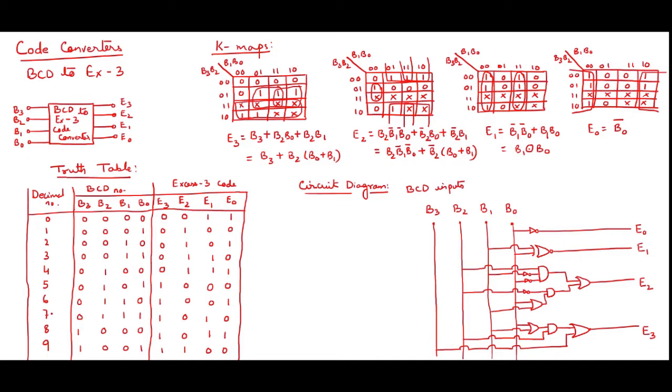So I have taken 0 to 9 for BCD, that is the decimal number, because BCD is nothing but binary coded decimal. Then I represent this decimal number 0 to 9 in BCD format. That is B3, B2, B1, B0.